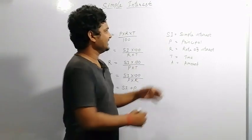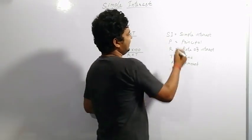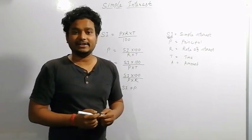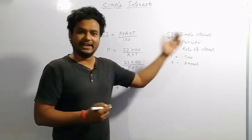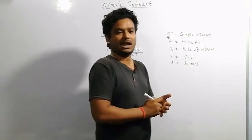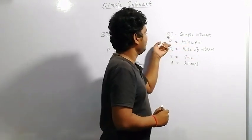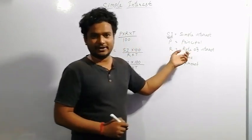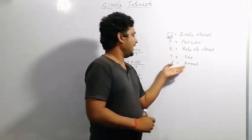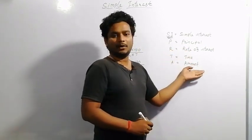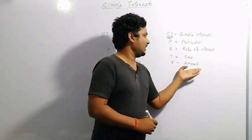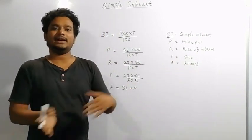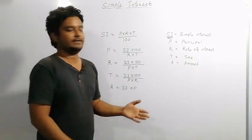First of all, SI generally denotes simple interest — the interest taken on a particular amount or money. P is the principal, R is the rate of interest, T is the time, and A is the amount. A is the amount, meaning it is the sum of principal and interest.